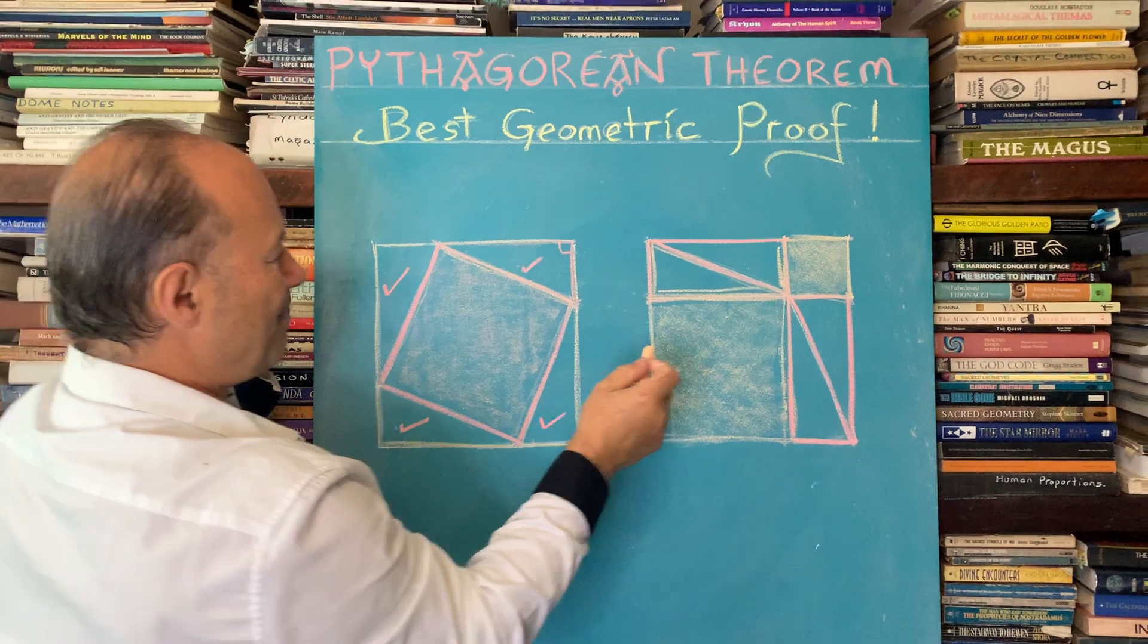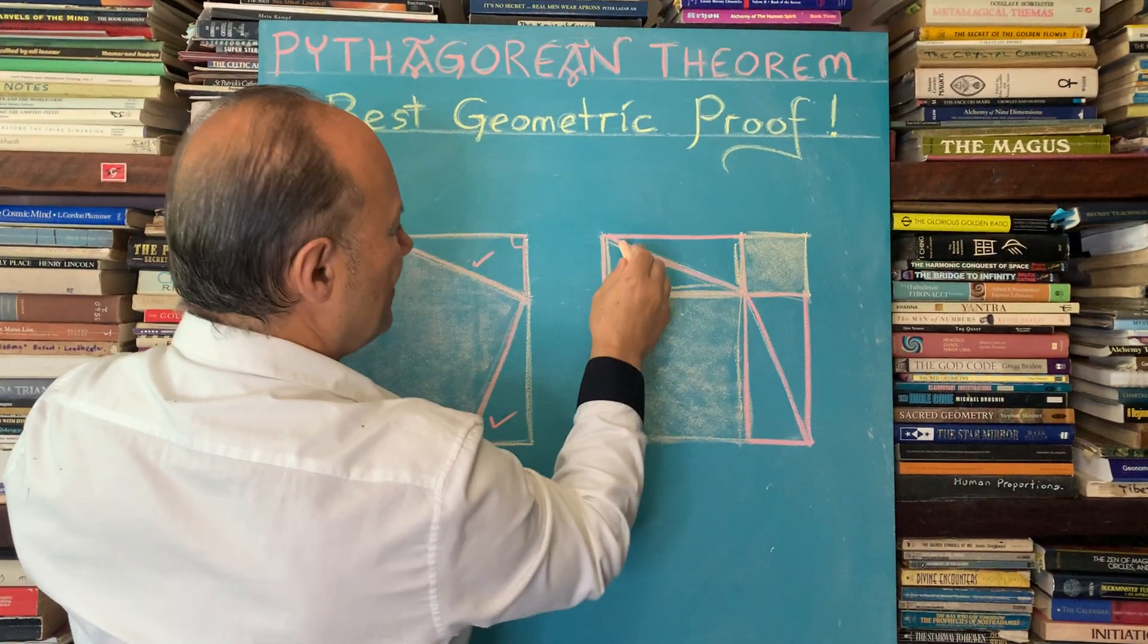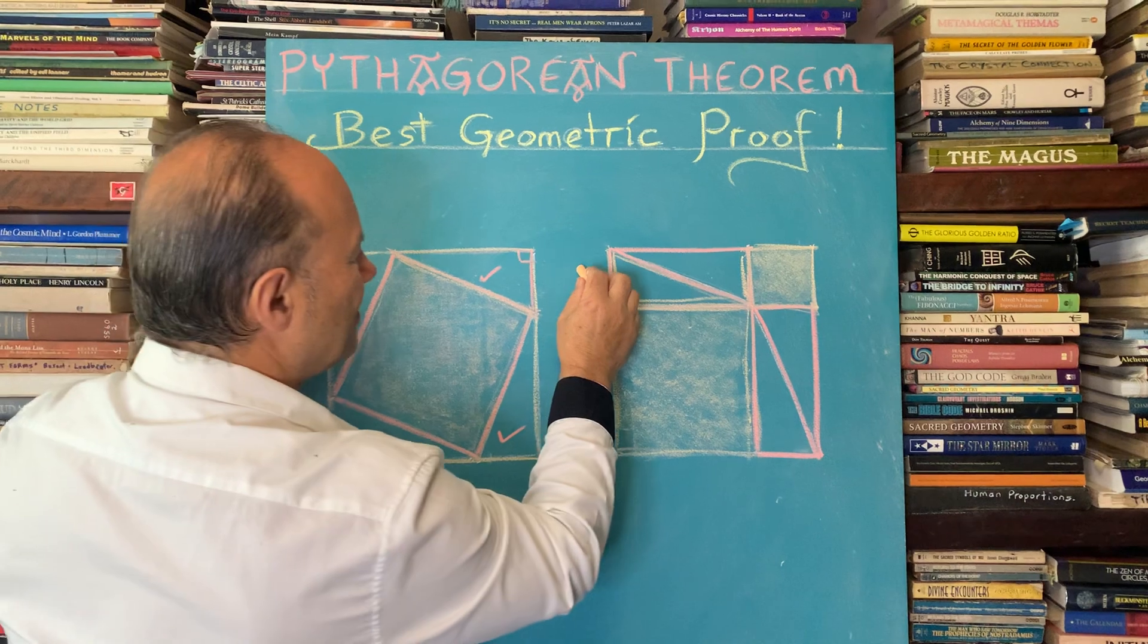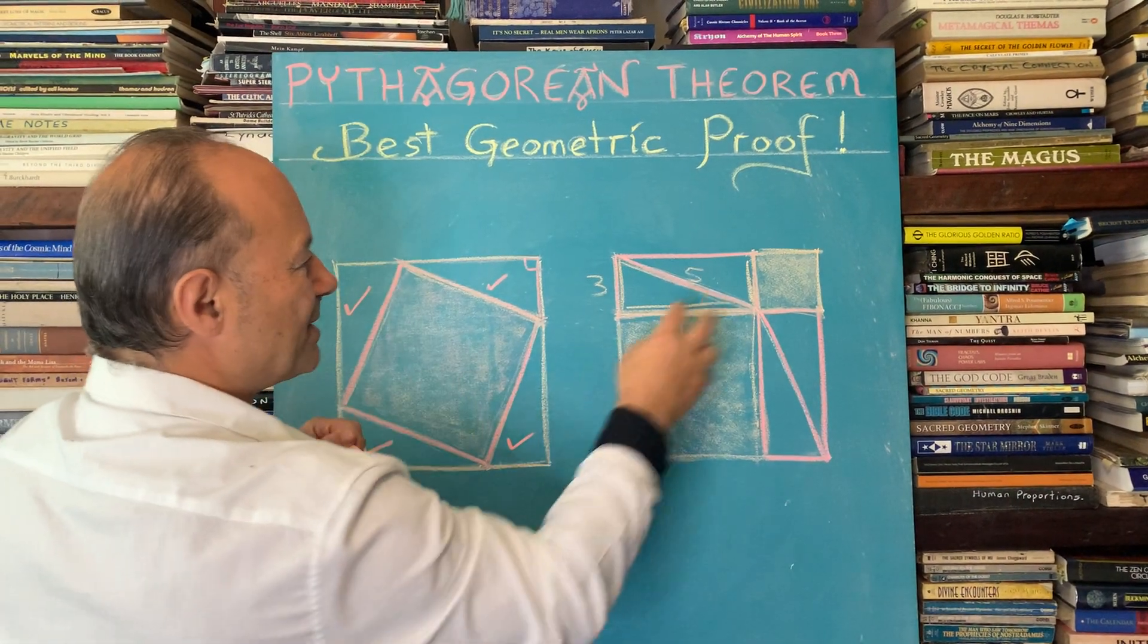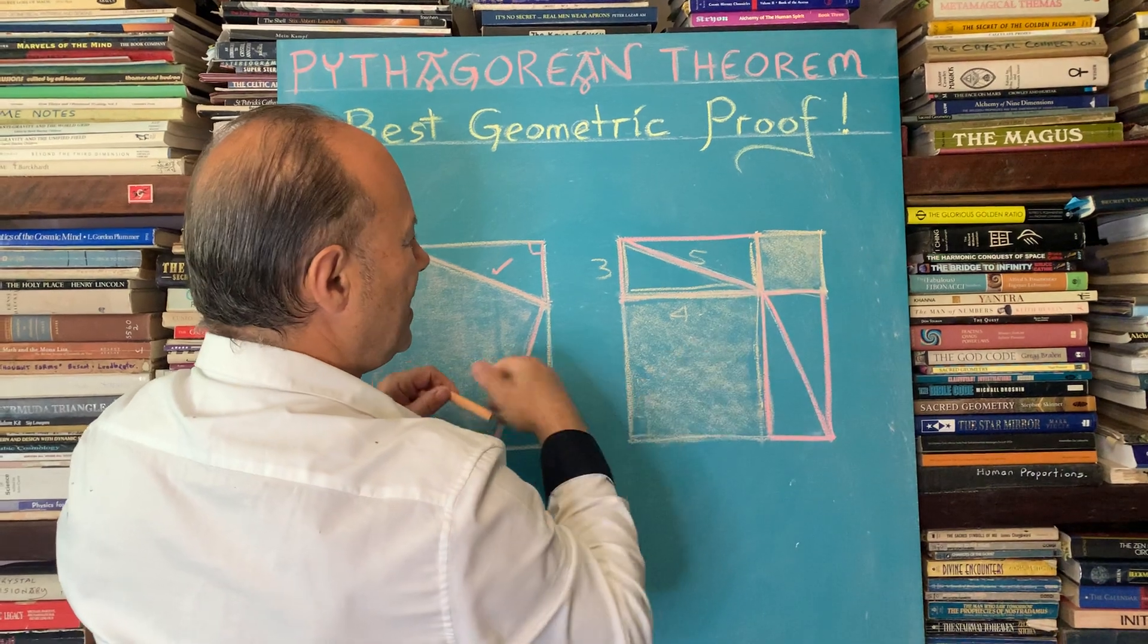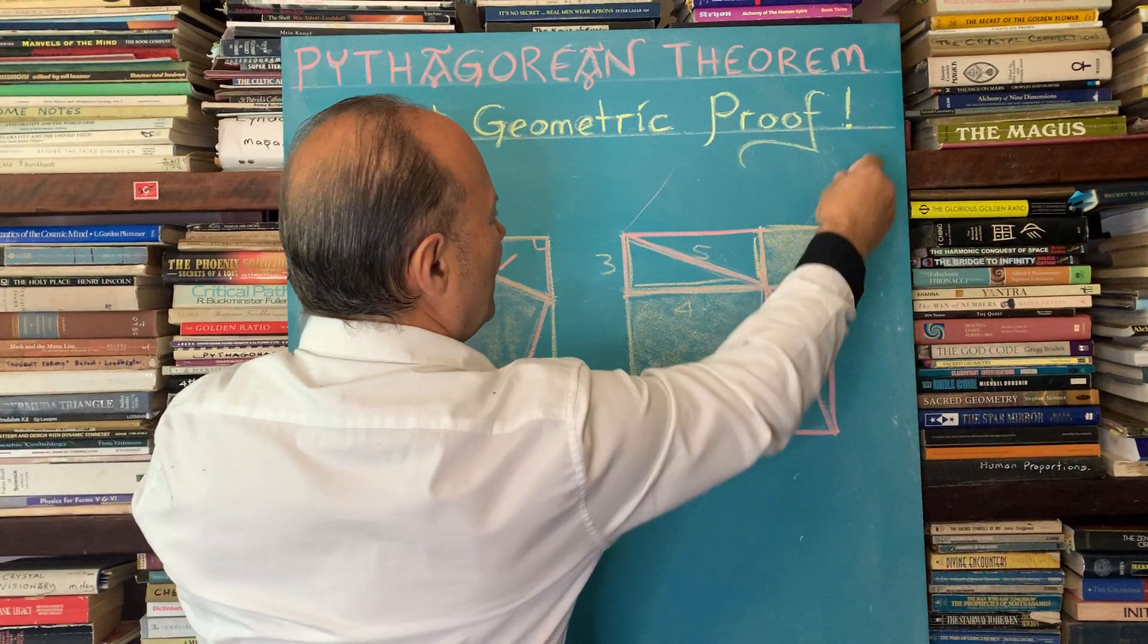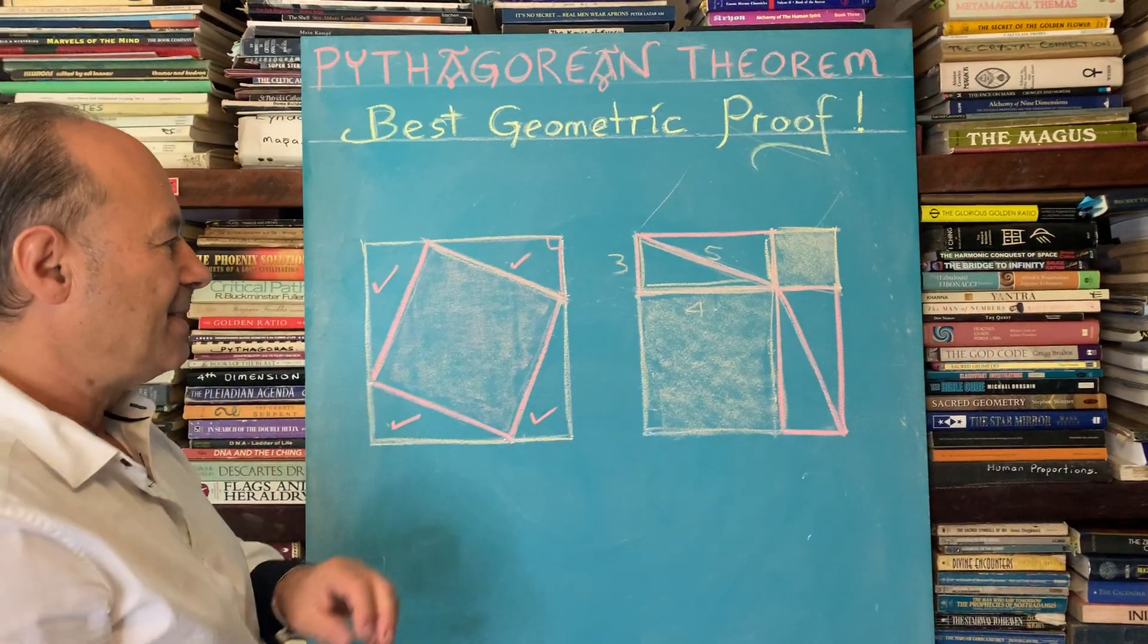So now we know that the square on the longest side must be the sum of this and that. So that means, that means by Pythagoras's theorem, if this is three and that's four and that's five, we know that the sum of these two is equal to the square on that side.